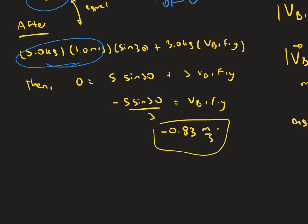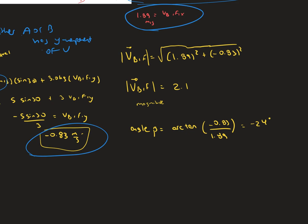Then we will have a value of negative 0.83 meters per second. Now to find the magnitude and direction of the velocity, we use the x and y components. So what we do is the square root of the x-component squared plus the y-component squared. And that should give us a positive value for the magnitude of 2.1.